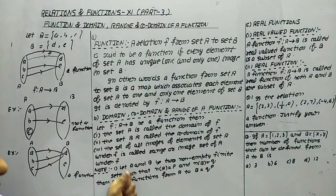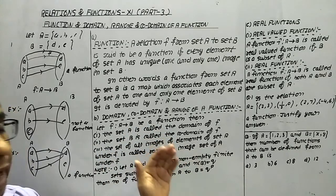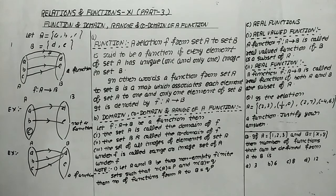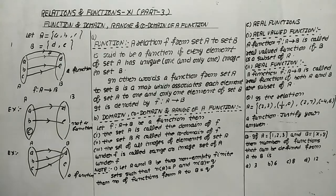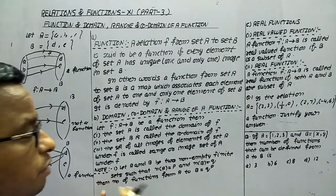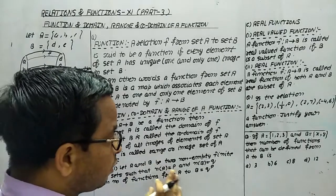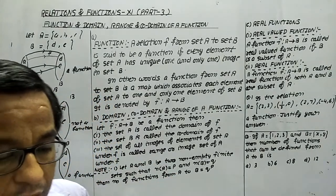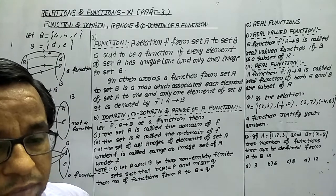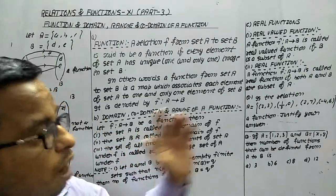Now, if set A has P number of elements and set B has Q number of elements, then the number of functions from A to B will be Q raised to the power P. This is a very important formula whenever we have to find out the number of functions from one set to another.